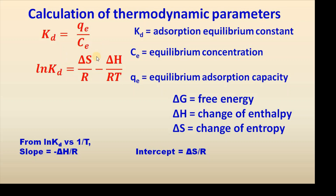Where ΔS is the change of entropy and ΔH is the change of enthalpy. The third equation is ΔG equal to ΔH minus T·ΔS, where ΔG is the free energy change.